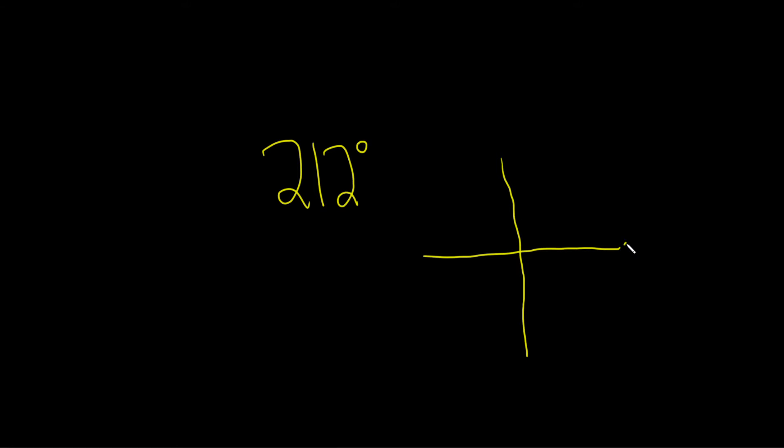Let's label the important angles. This is 0 degrees. This is 90 degrees. This is 180 degrees. We're not quite to 212 yet, so let's keep going.